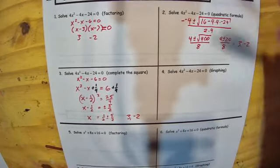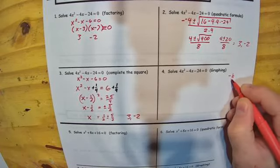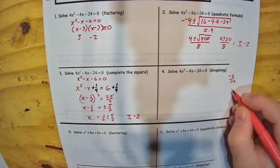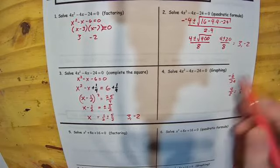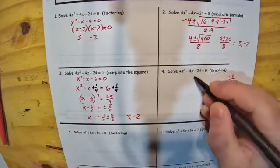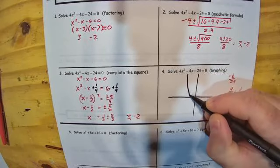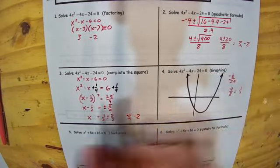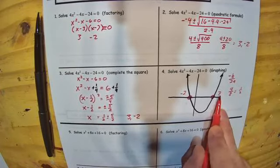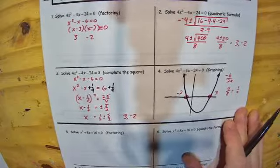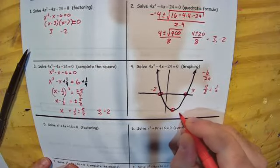Finally, if you go into Desmos and simply graph this, or graph it by hand, you can find the vertex using negative b over 2a. In this case, that's negative negative 4, or positive 4, over 2 times 4, which is 8. So 4 over 8 gives us one half — that's our vertex x-coordinate. When you draw the graph, what we're looking for is where it crosses the x-axis. It crosses at negative 2 and at positive 3, giving us the same solutions. The x-coordinate of the vertex is one half, at this point right here, at positive one half.